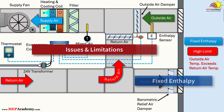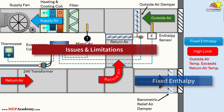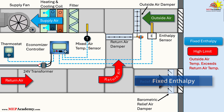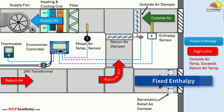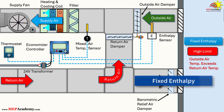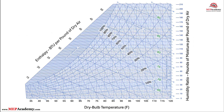Issues and Limitations. Despite considering humidity, fixed enthalpy has notable flaws. It can err by disabling the economizer in cool, rainy weather – high humidity but low temperature – missing cooling opportunities in cold climates. In dry climates, it might enable during warm, dry conditions, increasing sensible loads unnecessarily. Sensor inaccuracies are significant, ±2 BTU/lb, especially with humidity sensors that drift over time and require frequent calibration, leading to higher maintenance costs. Analysis shows it's often not cost-effective compared to dry bulb methods, with errors more pronounced in dry climates like Albuquerque, Zone 4B. Standards restrict it in dry, marine, or very cold climates, and it's generally not recommended due to added complexity without proportional benefits.